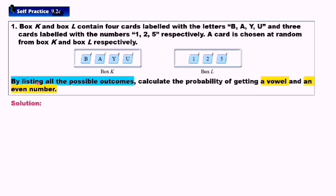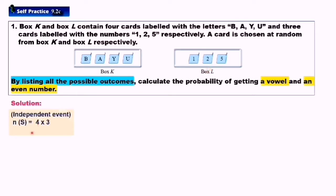The keyword here is 'by listing all the possible outcomes,' which means you need to list out all the possible outcomes, and based on those, find the probability of getting a vowel and an even number. You cannot use the multiplication rules formula to answer this question. This is an independent event — taking a card from Box K never affects the result of taking a card from Box L. The number of sample space equals 4 times 3, which equals 12.